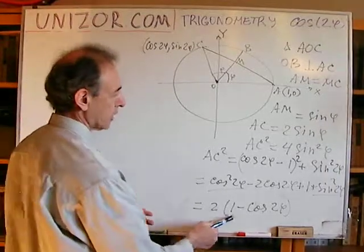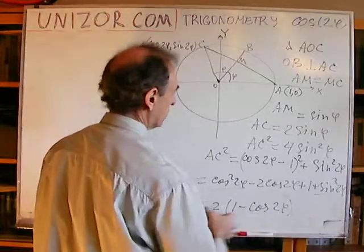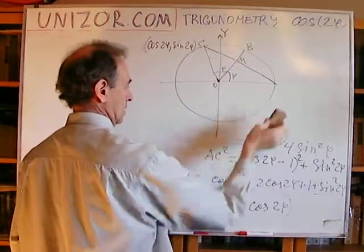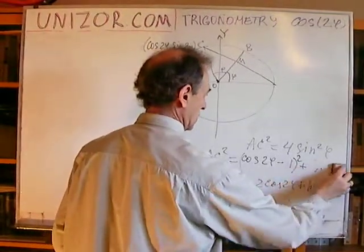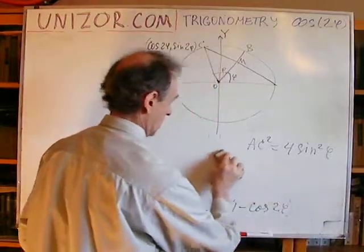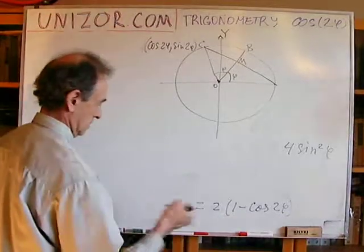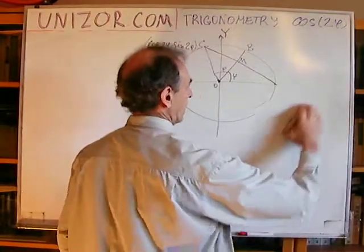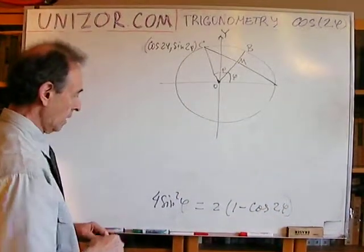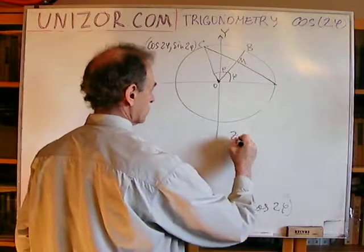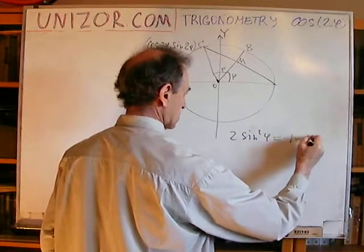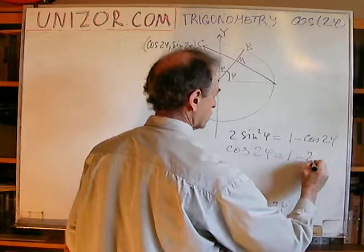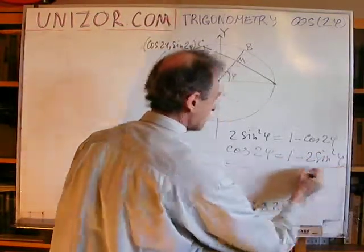Opening the parenthesis, I get cos² 2φ minus 2 cos 2φ plus 1, plus sin² 2φ. Using the fundamental trigonometric identity sin² plus cos² at the same angle equals 1, this simplifies to 2 minus 2 cos 2φ, which equals 2(1 minus cos 2φ). Setting this equal to 4 sin² φ and dividing by 2 gives: 2 sin² φ equals 1 minus cos 2φ. Therefore, cosine of 2φ equals 1 minus 2 sine squared φ.